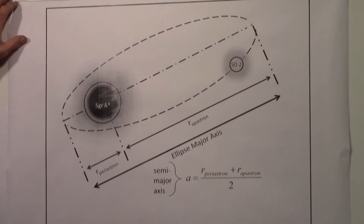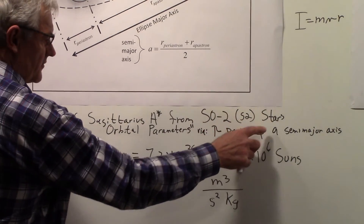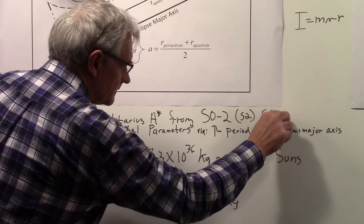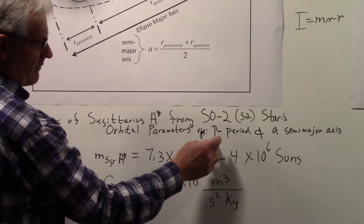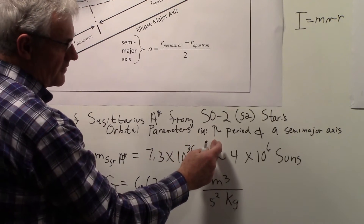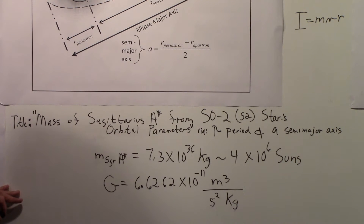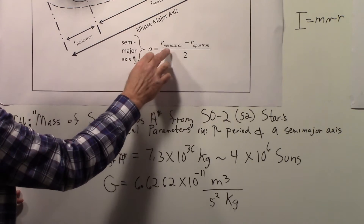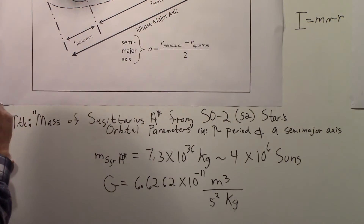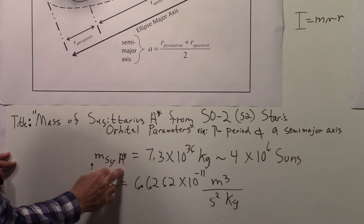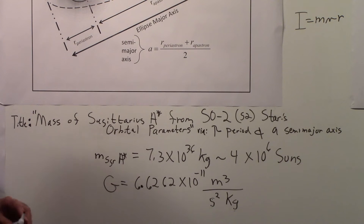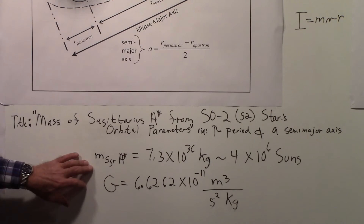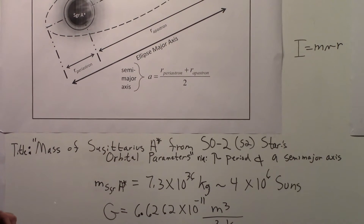In another video titled 'Mass of Sagittarius A* from SO2/S2 star's orbital parameters,' we used the period for SO2 and its semi-major axis to find the mass of Sagittarius A*. We're pointing out what that mass was because we're going to need it. That mass is very large — roughly four billion solar masses. Another number we're going to need is the gravitational constant.